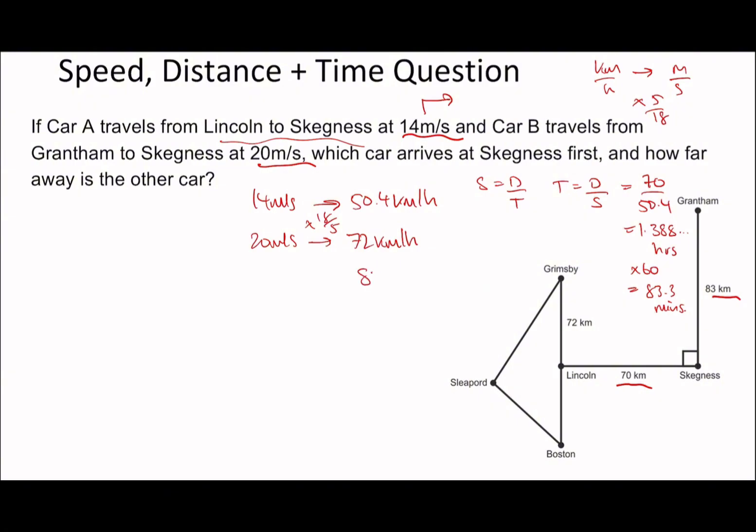The other distance is 83 kilometers. Speed is distance over time, so 83 divided by 72 km/h is 1.15 hours. Times by 60, so it takes this car 69.17 minutes, though it should be 69.16 recurring.